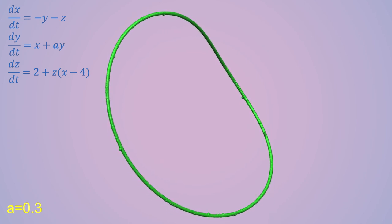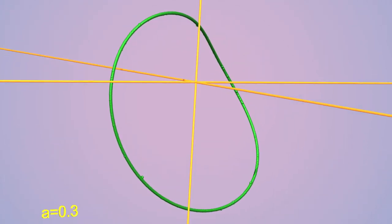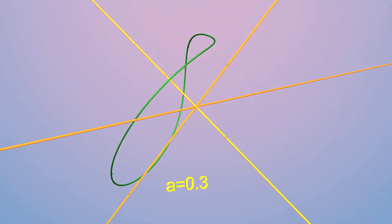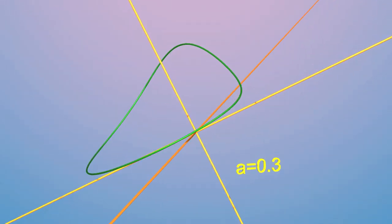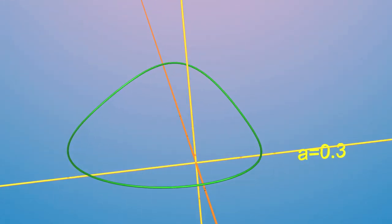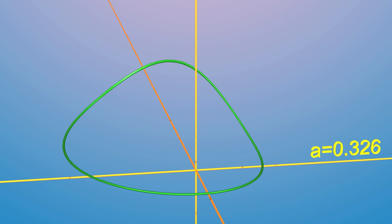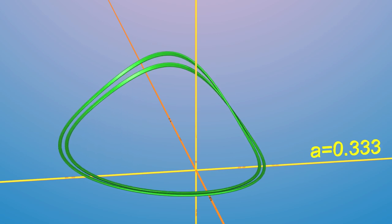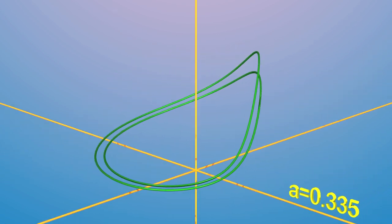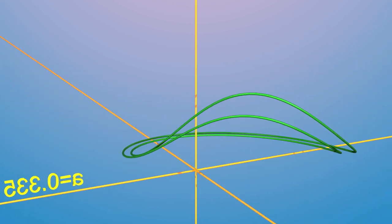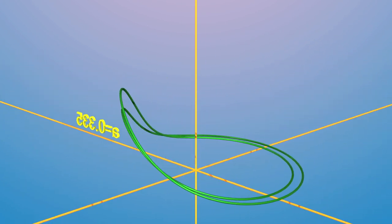Let's slowly change the parameter A. We see that, for A equal to 0.335, the periodic trajectory splits apart.